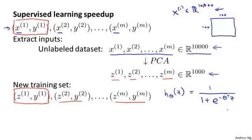And finally, if you have a new example, maybe a new test example x, what you do is you would take your new test example x, map it through the same mapping that was found by PCA to get your corresponding z. And that z then gets fed to this hypothesis, and this hypothesis then makes a prediction on your input x.